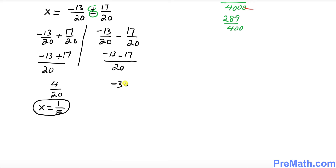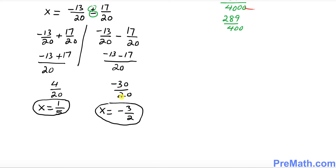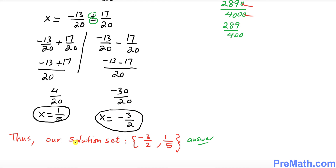For the first: −13 + 17 = 4, so x = 4/20 = 1/5. For the second: −13 − 17 = −30, so x = −30/20 = −3/2. Thus our solution set is {−3/2, 1/5}. Thanks for watching and please subscribe to my channel for more exciting videos.